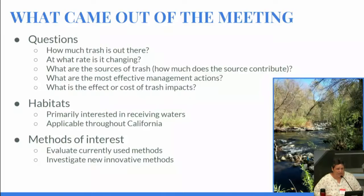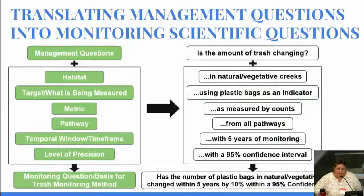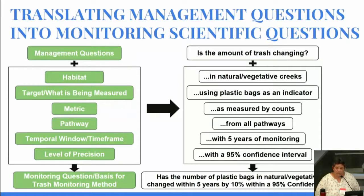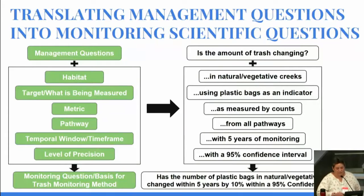There were a lot of questions that came out of the meeting. Most people were interested in looking primarily at rivers and streams, at least initially. This project will move on to other environments as we work through it. There was a lot of interest in evaluating methods that had already been developed, as well as looking at maybe some new methods. One of the challenges is creating the questions we're looking at when we're looking at trash. We get general questions from management asking, 'Is it getting better or worse?' But how do we make that into a science question we can answer through monitoring? The group spent time working through different types of questions using a model, and one example question we came up with was: has the number of bags in creeks and streams changed within the last five years, and how confident are we in that measurement? And we can build some monitoring around that.